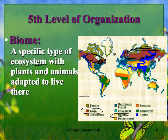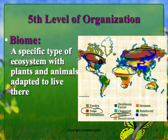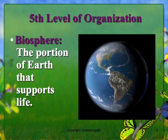Same thing for deserts — shown here in yellow, we have desert in Southwest America and deserts on the other side of the world. Any ecosystem that has a very dry, very hot climate would be categorized as a desert biome. The most broad level of organization is the biosphere — any portion of the Earth that supports life, from the surface all the way to the top of the atmosphere where birds can fly.